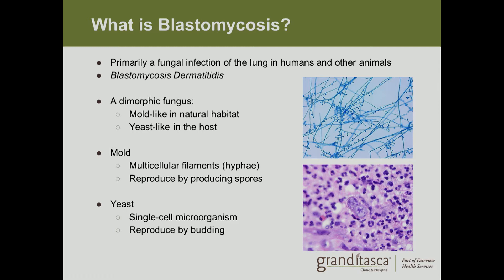In its mold form, it is a multicellular filament called hyphae, and it reproduces by producing spores. The top picture in blue is the mold form — it kind of looks like lollipops on a string. The yeast form is a single-celled microorganism, and it reproduces by budding, which you can see in the pink and purple picture in your lower right hand corner.